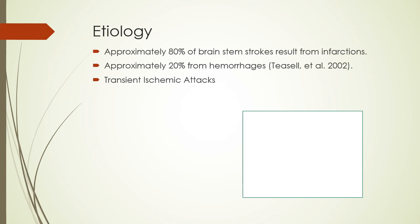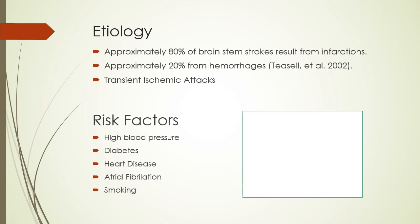Like most strokes, about 80% of brainstem strokes arise from ischemia, whether embolic or thrombotic, while 20% are hemorrhagic. Transient ischemic attacks can also manifest in the brainstem and contribute to the presence of lacunar disease or lacunar stroke. Risk factors for brainstem stroke are the same as for any stroke location, and while there are many modifiable factors, non-modifiable factors play a significant role as well.